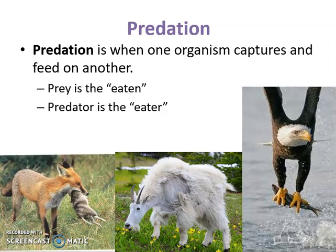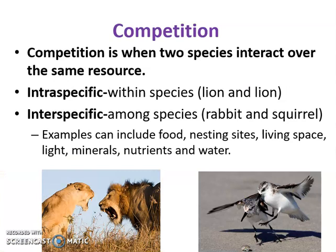Competition occurs when two species interact over a needed resource. Intraspecific competition is within the same species — for example, a male lion competing with another male lion for a mate. Interspecific competition is among different species — a rabbit and a squirrel might compete over the same diet. Competition can involve food sources, watering holes, nesting sites, or for plants, light and nutrients. Remember, it's not just animals that go through competition — everything in biology goes through competition.